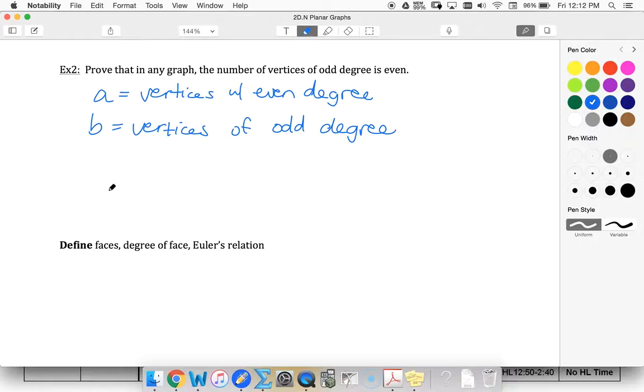We also know that every edge has two vertices connecting to it. So by the handshake lemma,